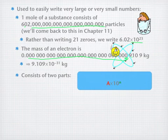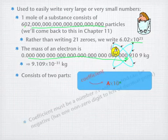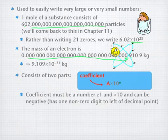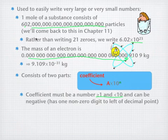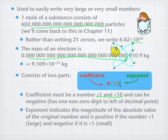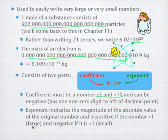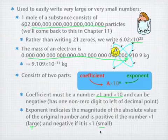In general, scientific notation consists of two parts. The first part, a, is the coefficient — the number that comes before the times sign. It must be between 1 and less than 10, and it can be negative. This requirement of being between 1 and 10 ensures only one non-zero digit to the left of the decimal point. The exponent, n, is the power of 10 and represents the magnitude of the original number. It's positive for numbers greater than 1, and negative for numbers less than 1.